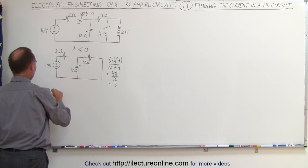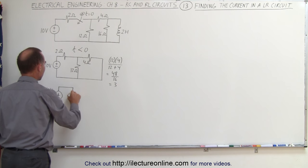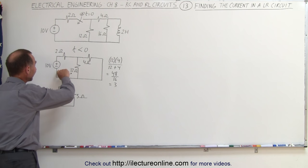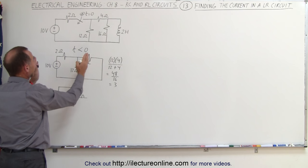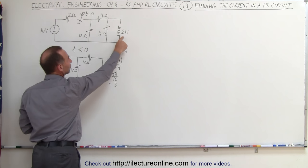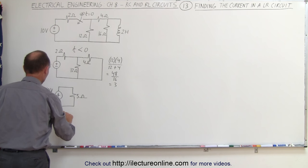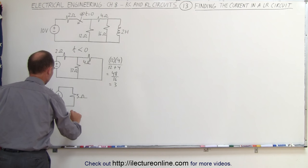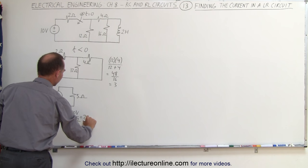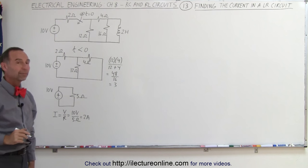So the equivalent circuit right here would be a 10 volt source and a single 5 ohm resistor. Therefore, the current leaving the 10 volt source in the circuit prior to opening the switch — while the inductor is acting like a short — will simply be, using Ohm's law, I equals V over R, which is 10 volts over 5 ohms, which is 2 amps. So the initial current in the circuit will be 2 amps.